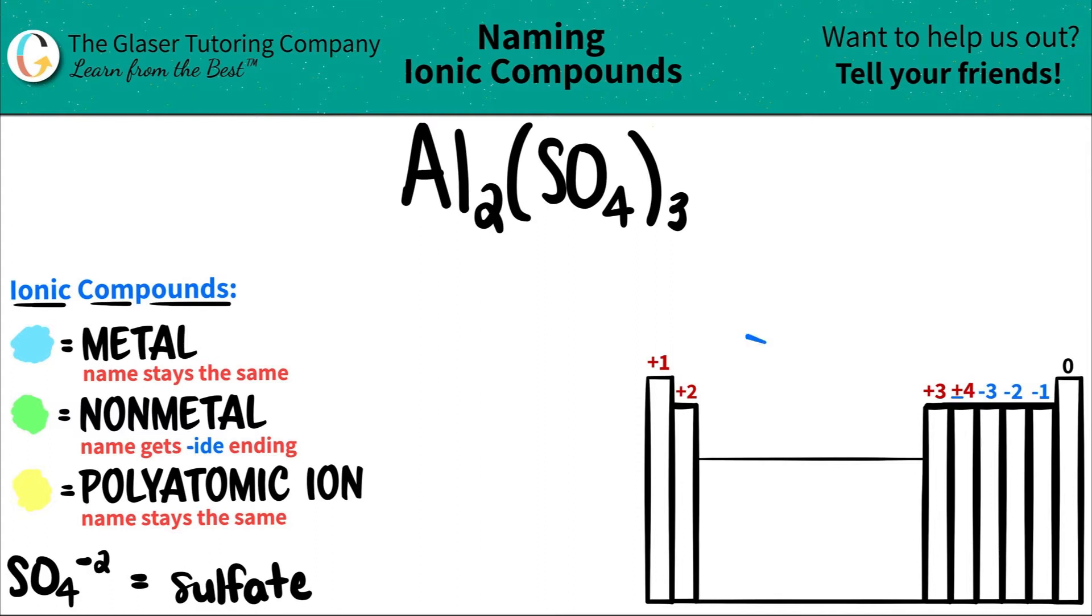But the hard part is that polyatomic ions are never found on the periodic table. You have to memorize them. So flashcard it out, write these guys down, these polyatomics, so that you can memorize them because they're never going away.